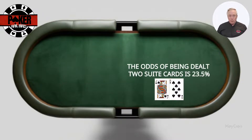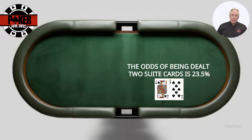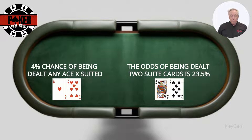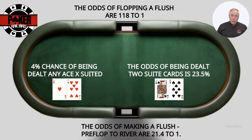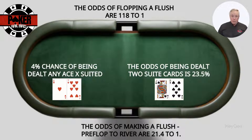What about suited hands? The probability of being dealt two suited cards is about 23.5%. This is important for hands with drawing potential, and plays a key role in deciding whether to play speculative hands like suited connectors. For example, if your starting hand is Ace-X suited, which you have a 4% chance of being dealt, the odds of flopping a flush are 118 to 1. From preflop to river, you have a 4.67% chance, or 21.4 to 1 odds, of making a flush by the time all five community cards are dealt. Additionally, if you're holding two cards of the same suit in a nine-handed game, there's about a 30.6% chance that at least one of the other players is also holding two cards of your suit. This possibility impacts your decisions, especially in multi-way pots where drawing potential and suit domination come into play.